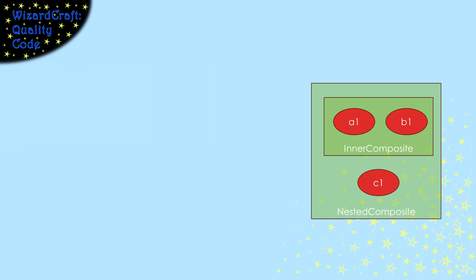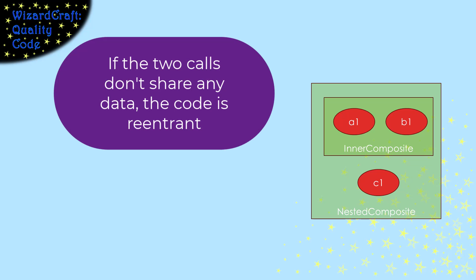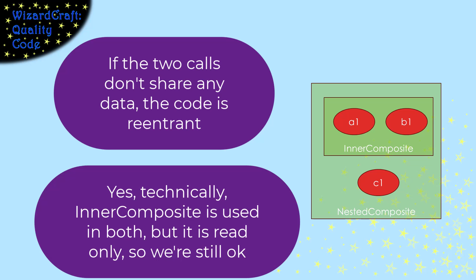So, we have the first way that we can know your code is re-entrant. If it only uses local variables, it's re-entrant. The interrupting call can't affect any of the first call's data. Since they don't share anything, everything will be okay. So, let's make them share something to show how this could not be re-entrant.